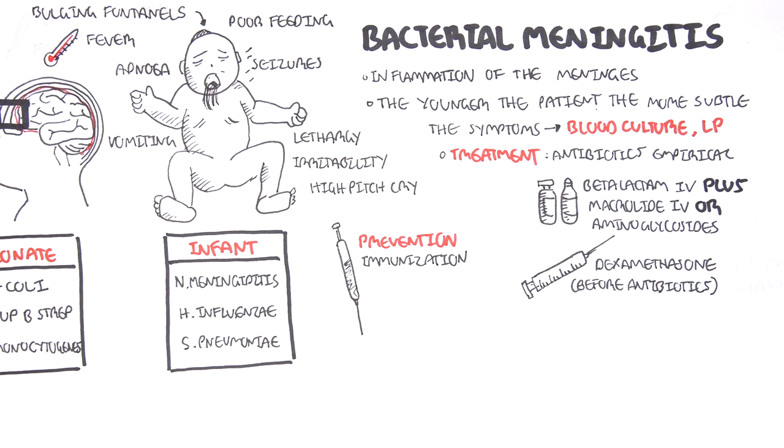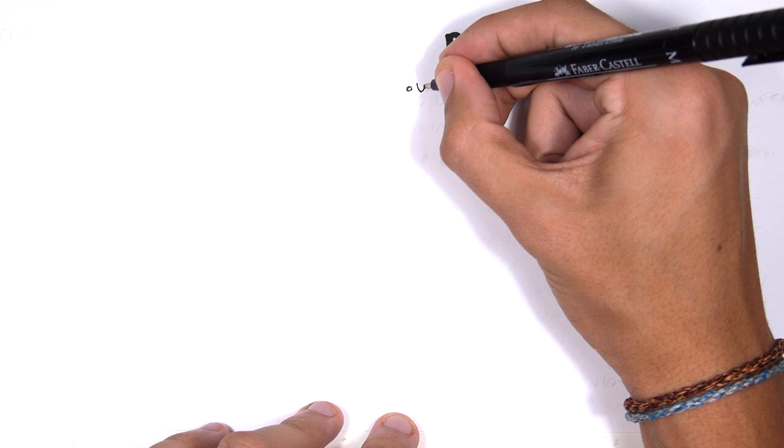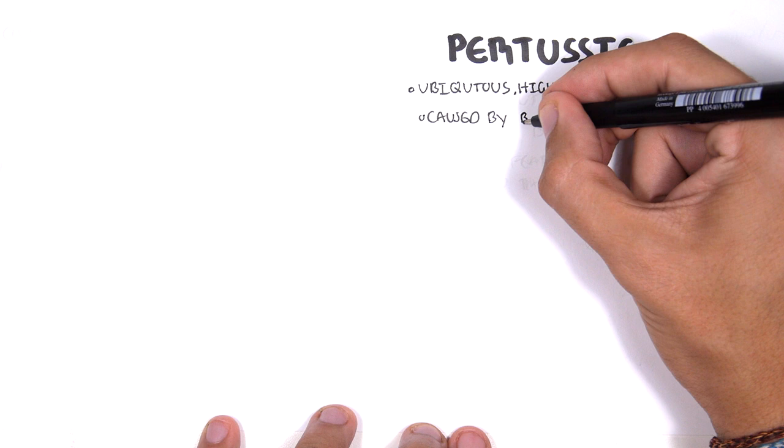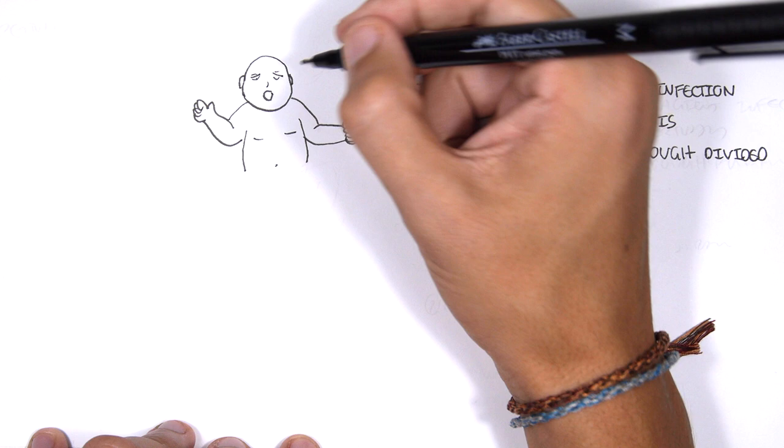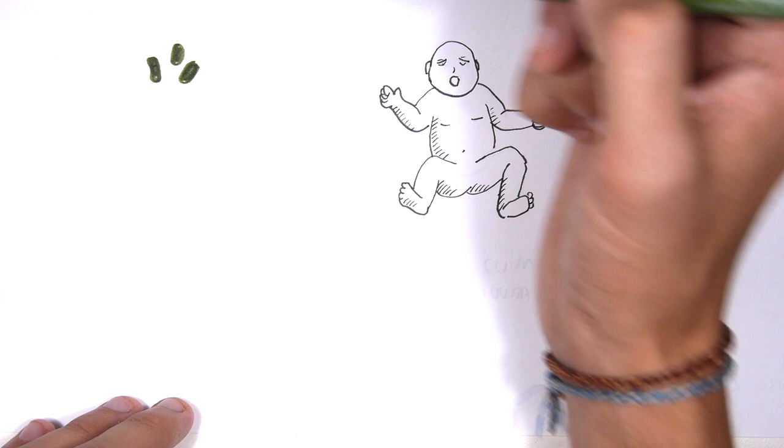The next infection you must know for an ill infant is pertussis, which is a ubiquitous, highly contagious infection. It's caused by the bacteria known as Bordetella pertussis. It's essentially known as the 100-day cough and it's divided into three stages. The bacteria Bordetella pertussis, a coccobacillus, infects the infant via air droplets.